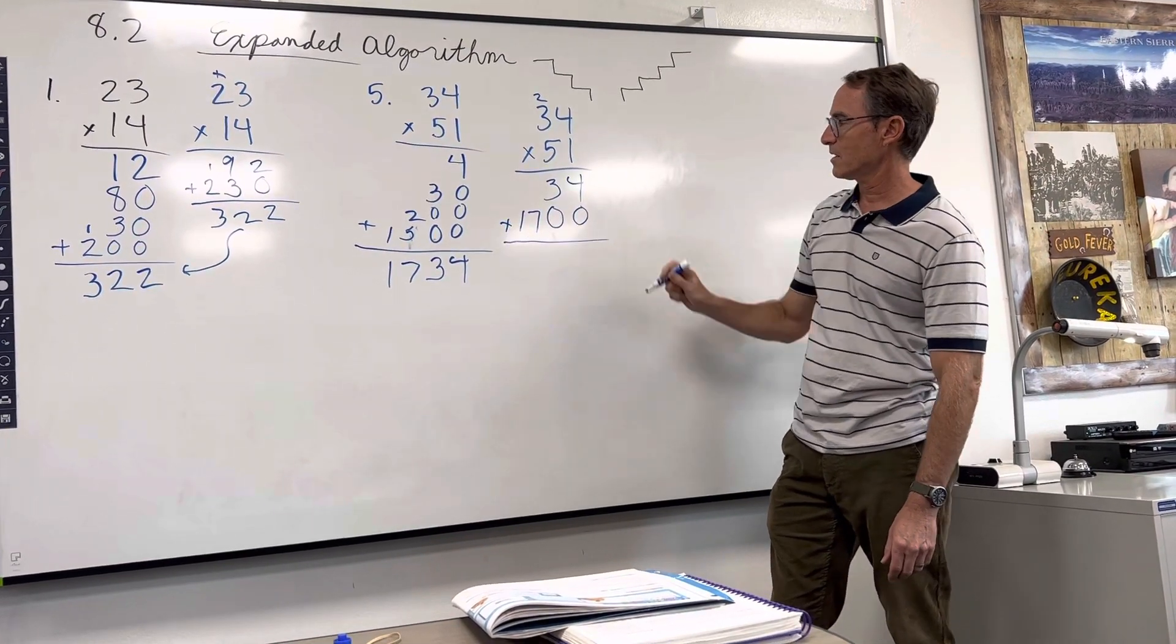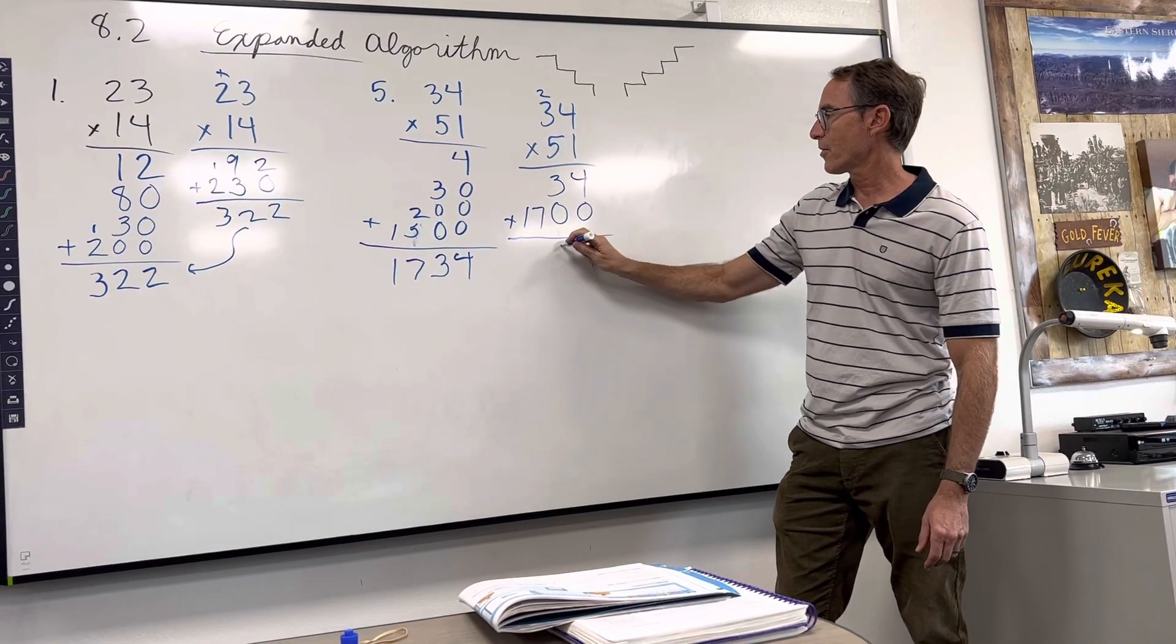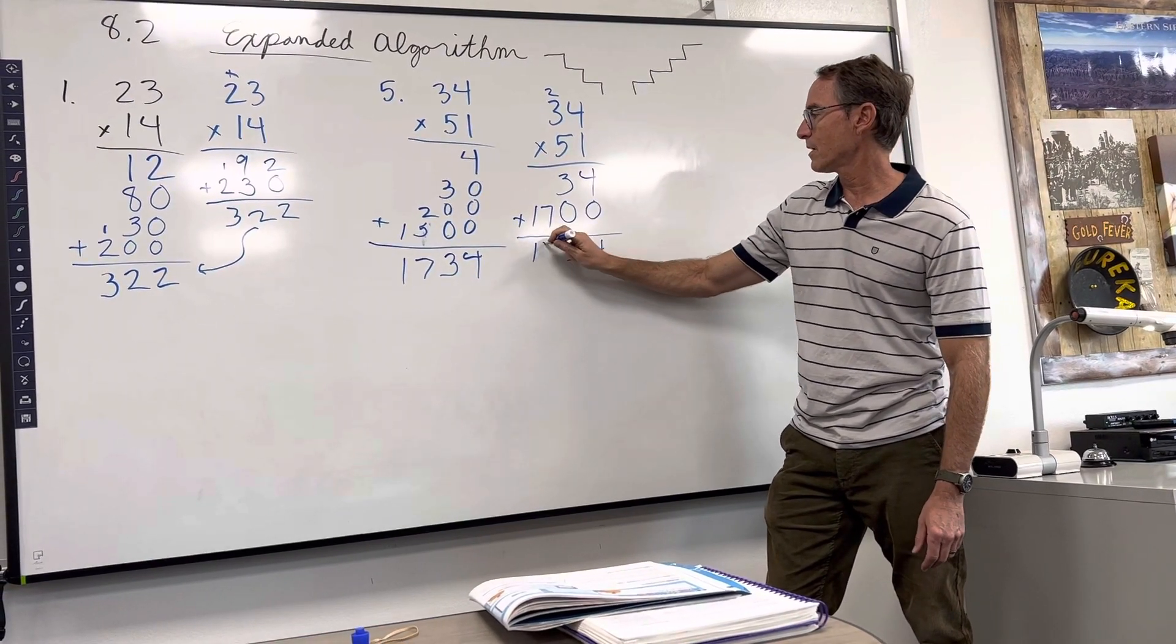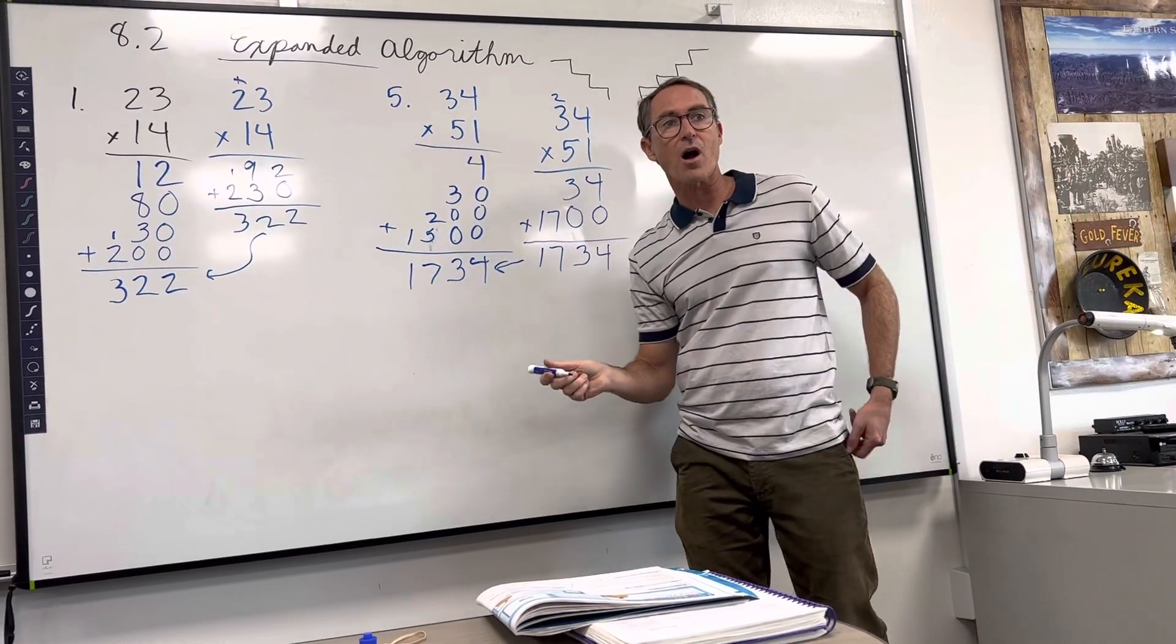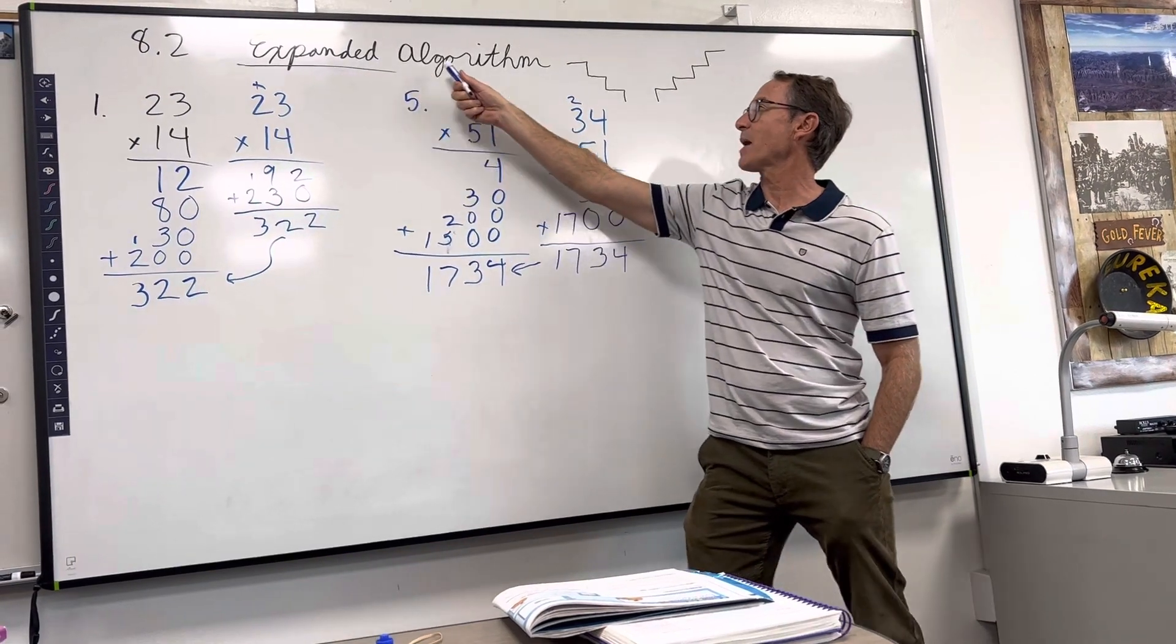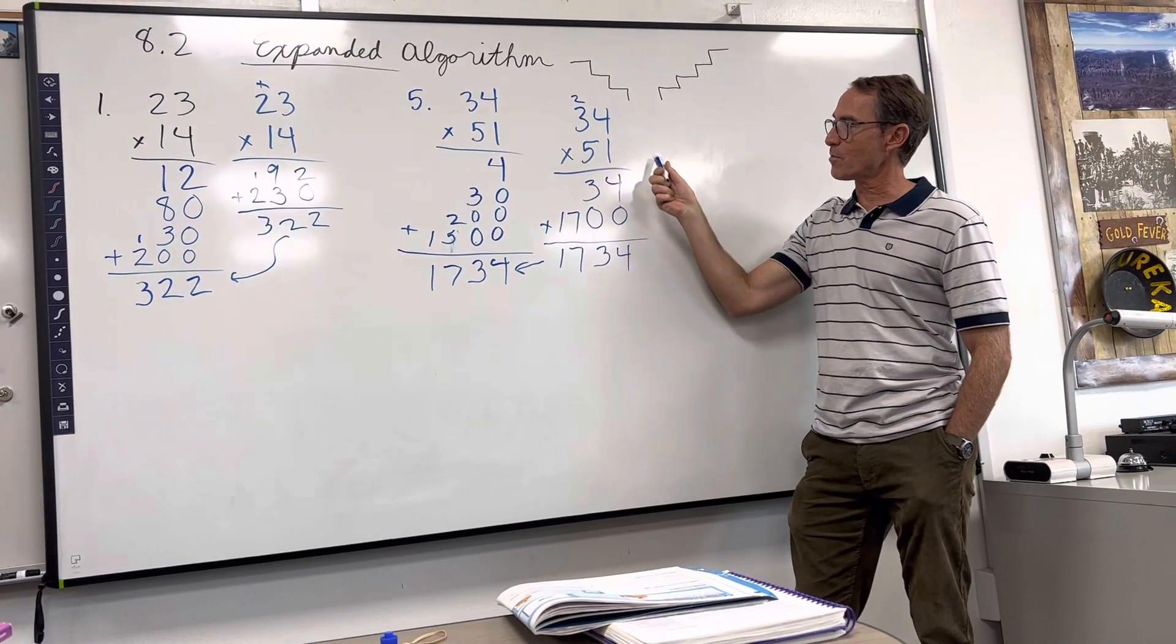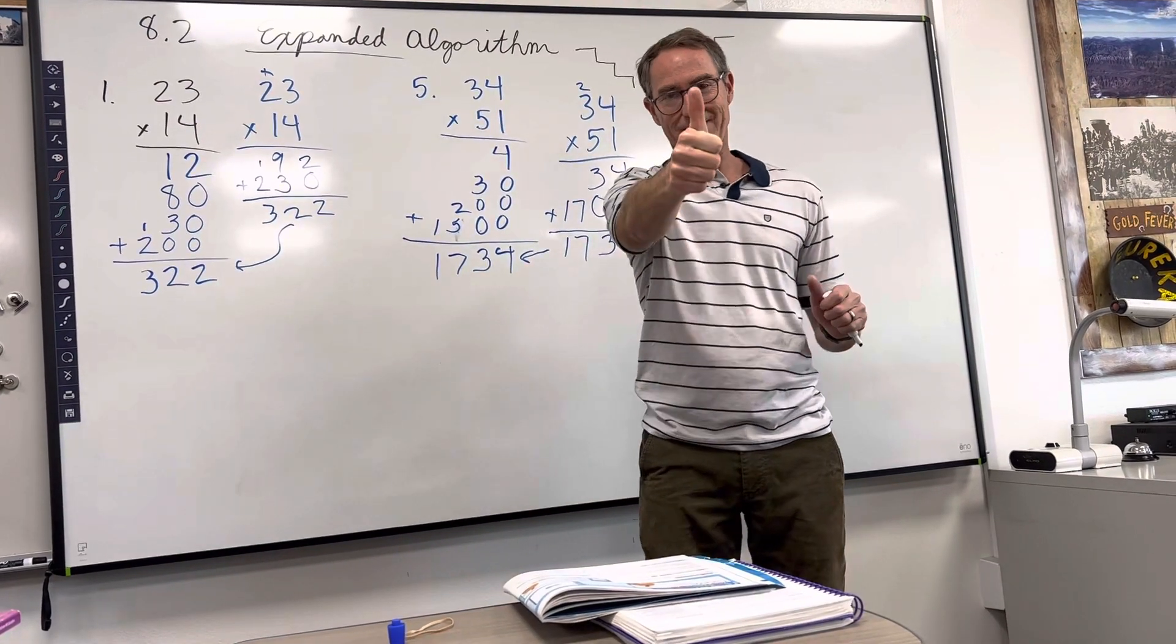Do you think we're going to get the same answer? Yeah. Let's see: 4 and 0 is 4, 3, 1 and 7. Bingo! Same answer, different problem. This is what type of problem everybody? Expanded algorithm. This is what kind of problem? Standard. So hopefully that helps. See you next time.